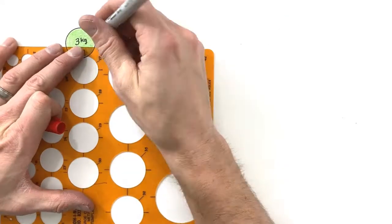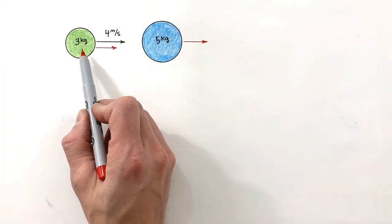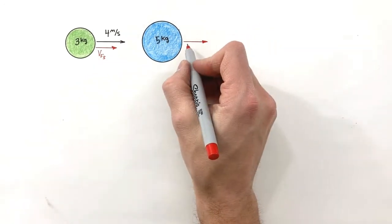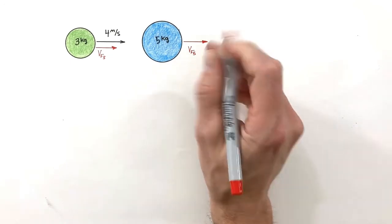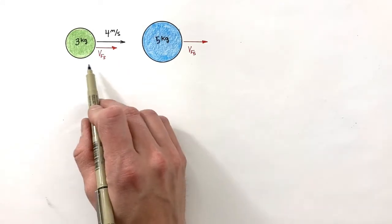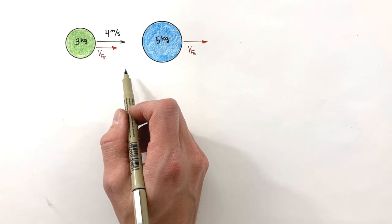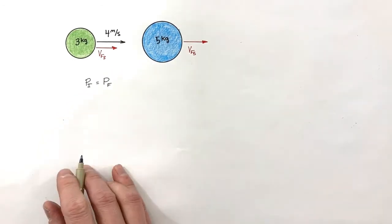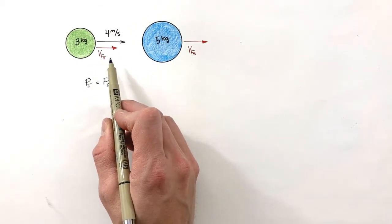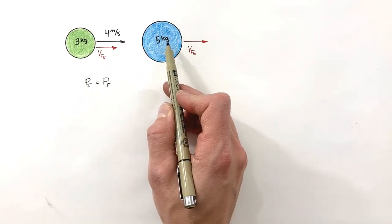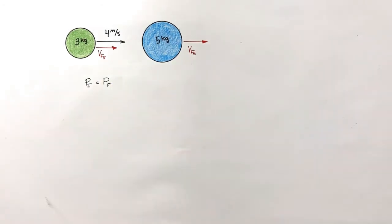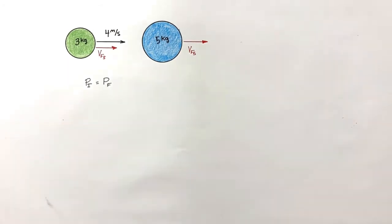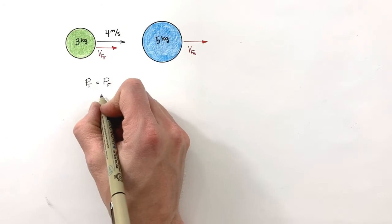After this collision, the three kilogram ball is going to be moving with some final velocity — I'll call this V_final for the three kilogram ball — and the five kilogram ball is going to be moving with some velocity we'll call V_final for the five kilogram ball. Just like any other collision, an elastic collision conserves linear momentum. That means the initial momentum in this problem is going to equal the final momentum.